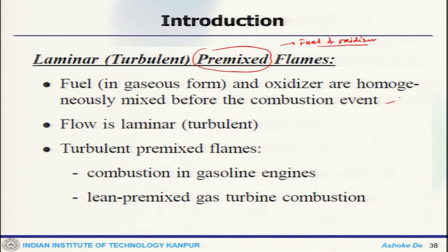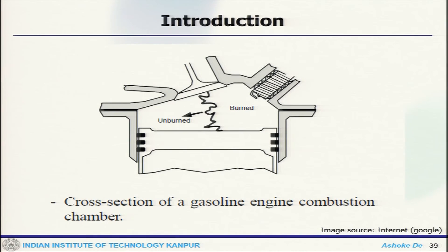Depending on the fluid behavior, the flow could be laminar or turbulent, giving either a laminar premixed flame or a turbulent premixed flame. Examples of turbulent premixed flames include gasoline engines and lean premixed gas turbine combustion. Spark ignition engines — used in two-wheelers, four-wheelers, and petrol-based cars — are a sort of premixed engine. The fuel-air mixture enters, ignition takes place, and there are unburnt and burnt products, followed by piston movement driving the engine cycles.